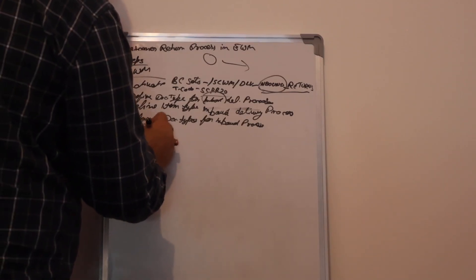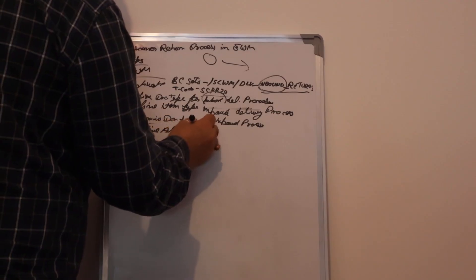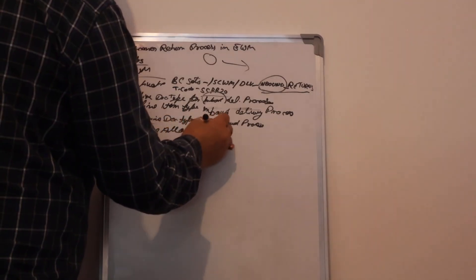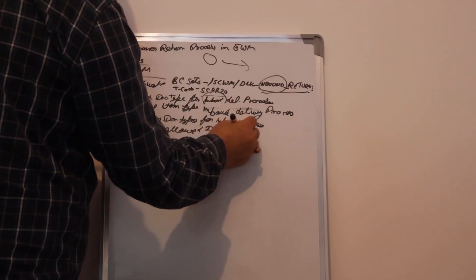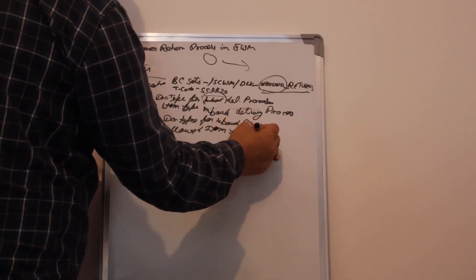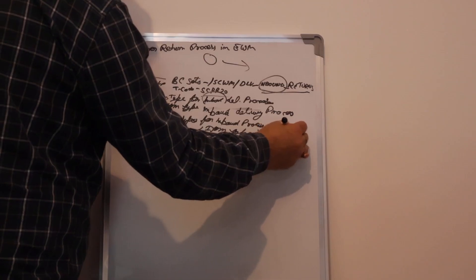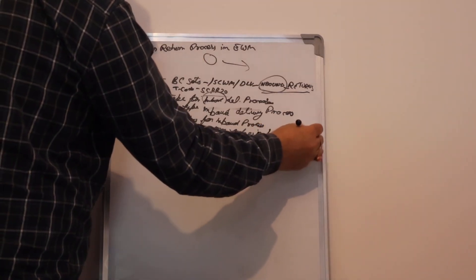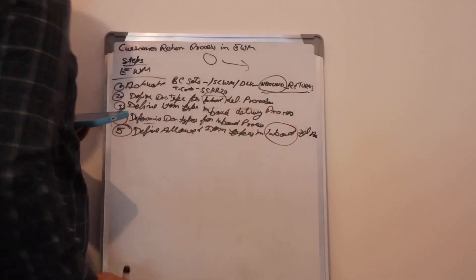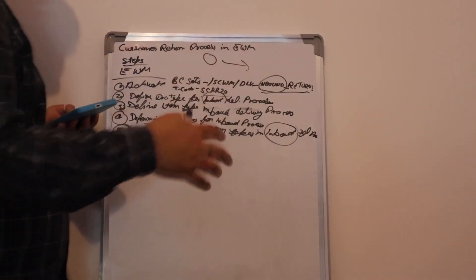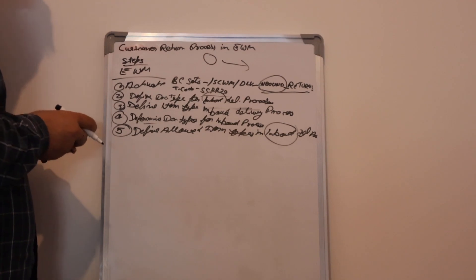Fifth: define allowed item types in the inbound delivery process. Because whenever the customer returns the goods, it comes through the inbound process into our warehouse.